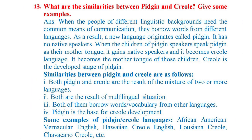Question 13: What are the similarities between pidgin and creole? Give some examples. Answer: When the people of different linguistic backgrounds need a common means of communication, they borrow words from different languages. As a result, a new language originates called pidgin. It has no native speakers. When the children of pidgin speakers speak pidgin as their mother tongue, it gains native speakers and becomes a creole language. Creole is the developed stage of pidgin.